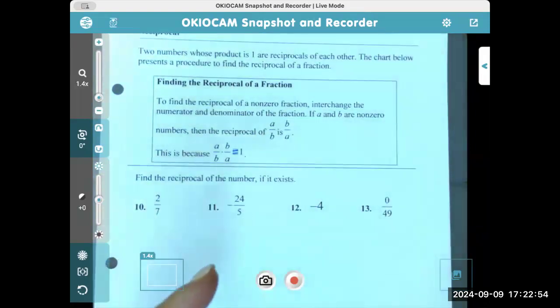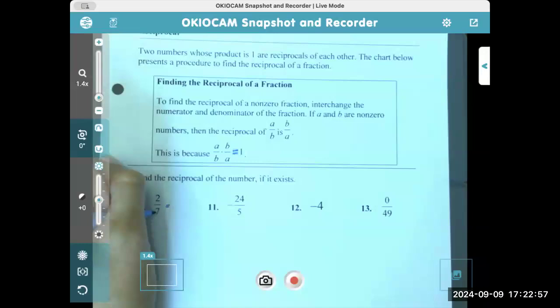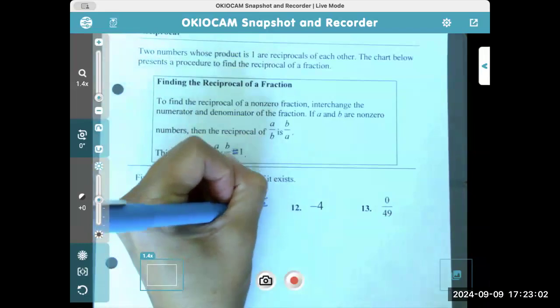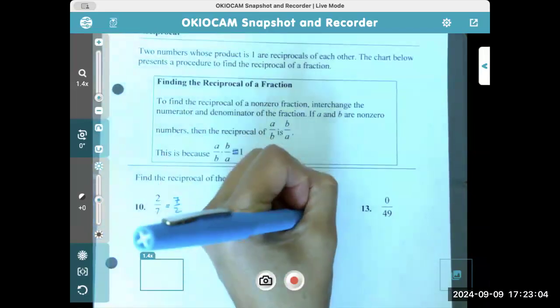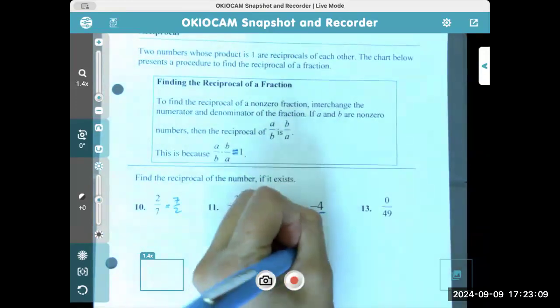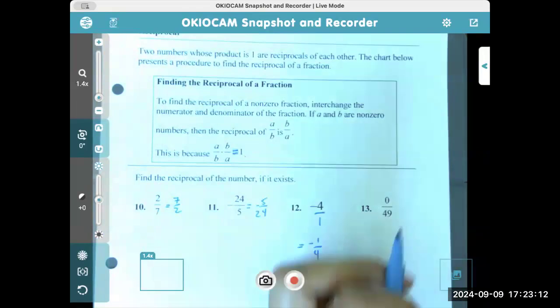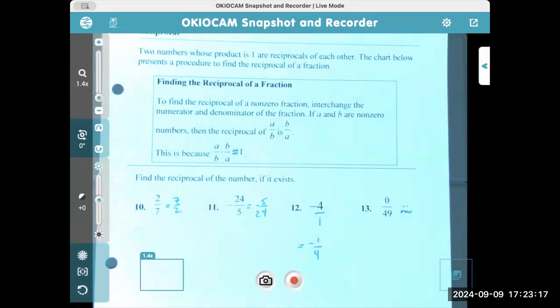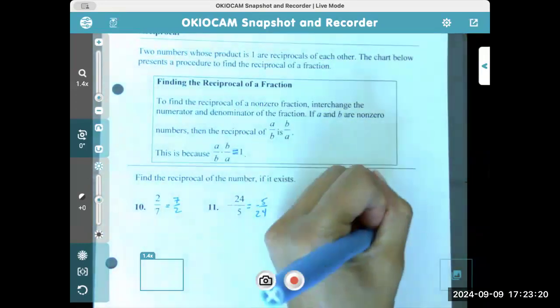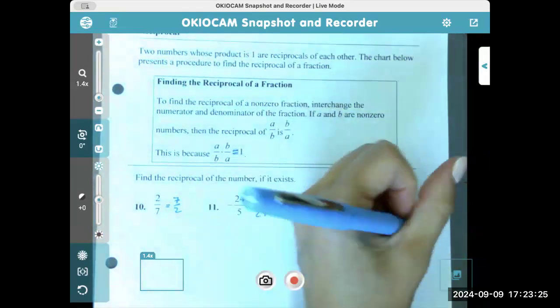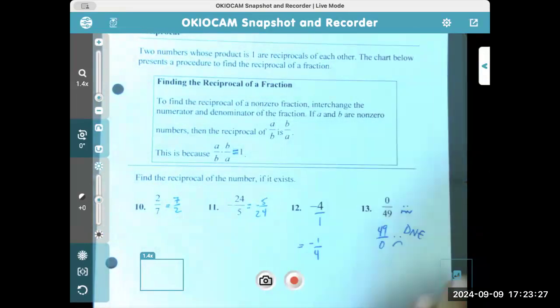So if we find the reciprocal of all of these, you literally just flip it and you keep the sign. So two over seven becomes seven halves. Then we have negative five over 24. Remember this is technically negative four over one. So what's the reciprocal of it? Yeah, just negative one fourth. And here, 0 over 49 is kind of the wonky one. Because if we flip it, what happens? We get 49 over zero, which is not good. So here the reciprocal does not exist. Perfect. Great job, y'all.